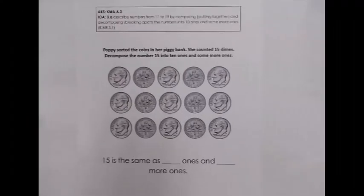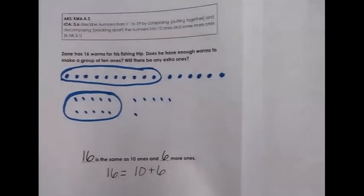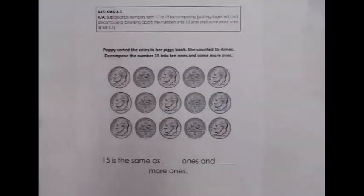Now for IOA 3A, we look at another representational decomposing example. Sometimes students draw the whole themselves, as with Zane's 16 worms. Other times, they are given a representation that already shows the whole, and they simply need to decompose it into the part of 10 ones and the part of some more ones.